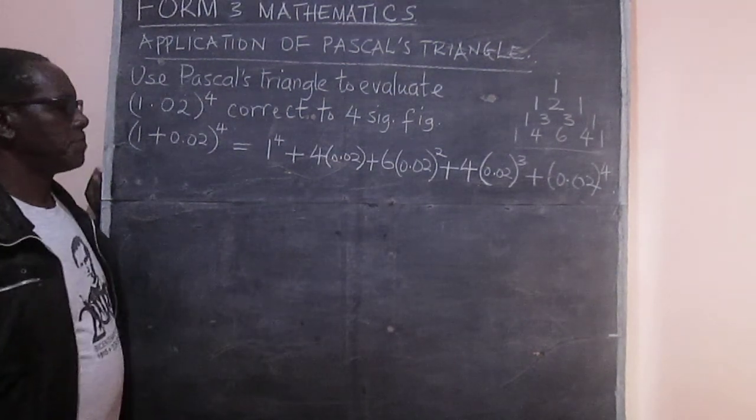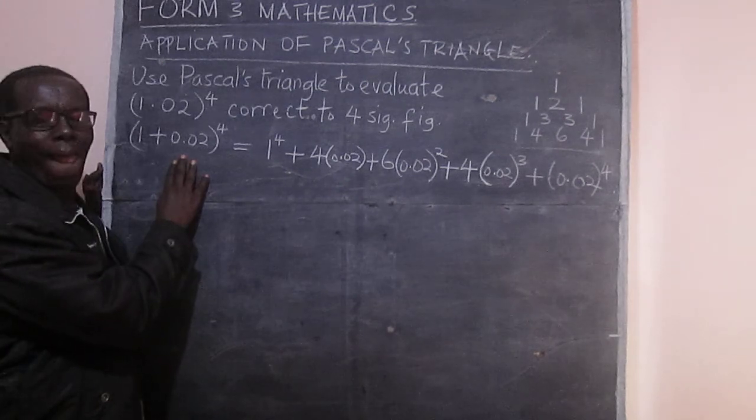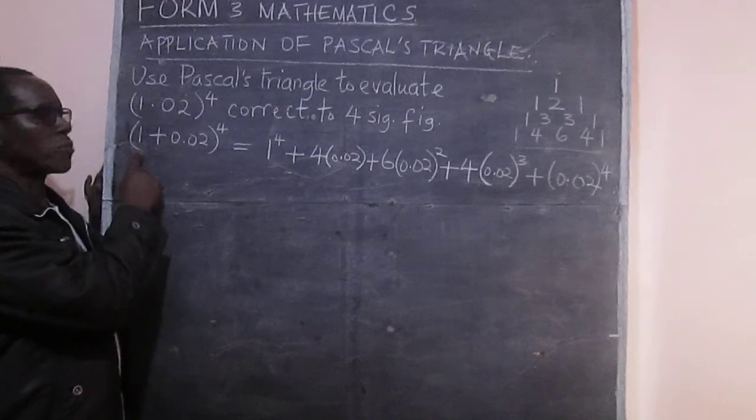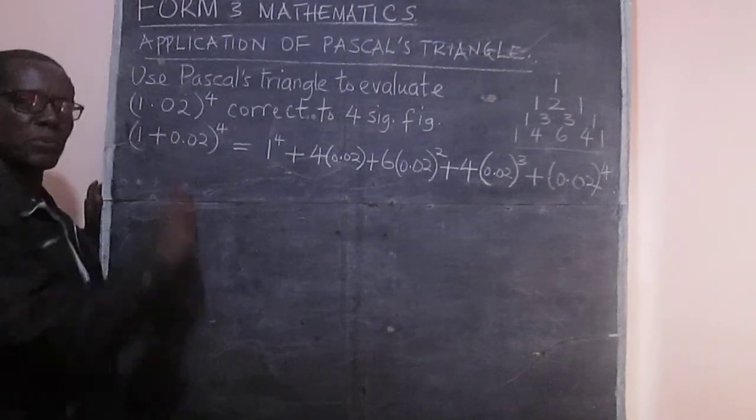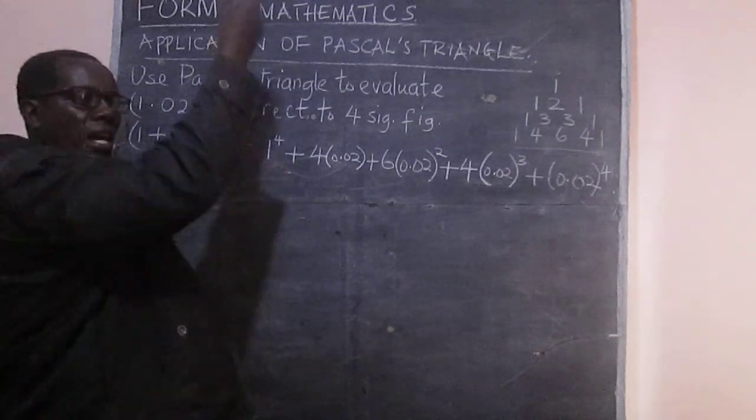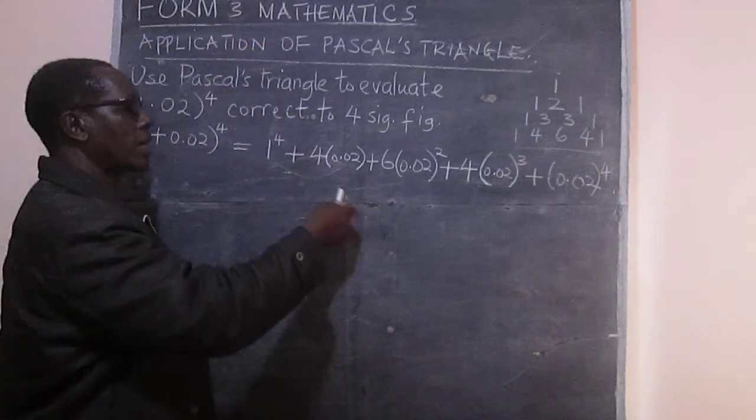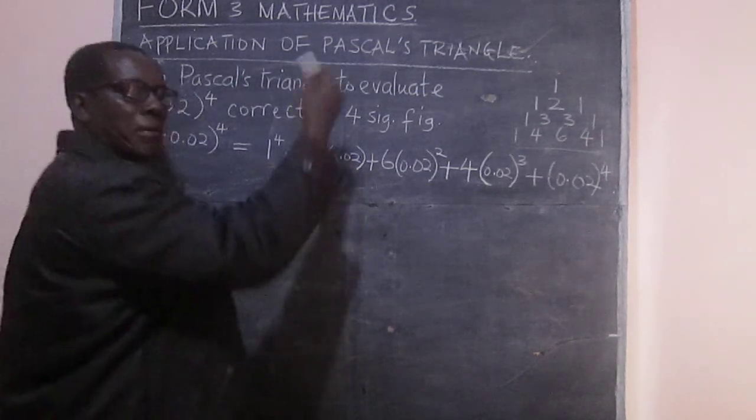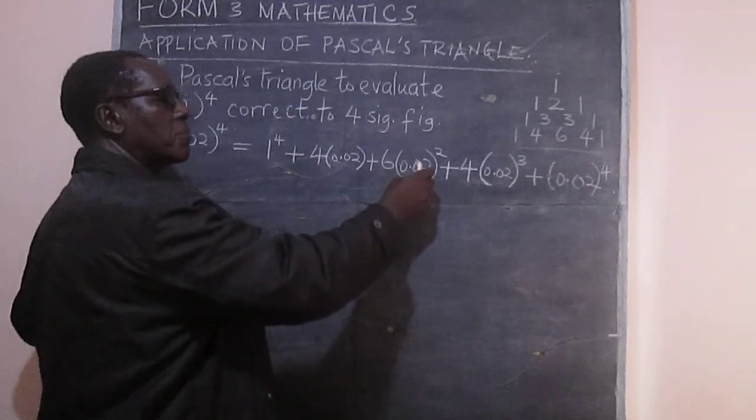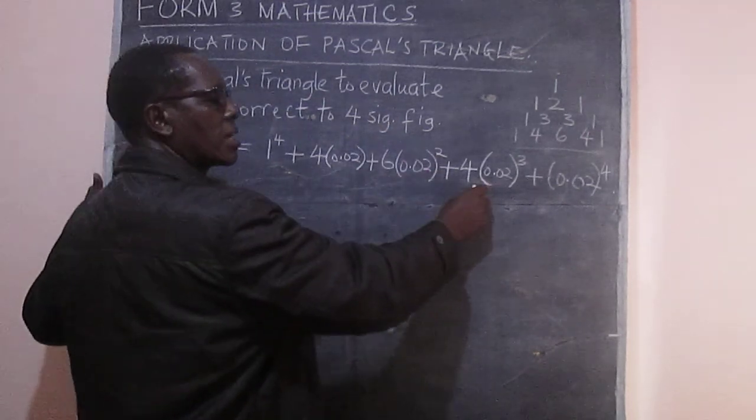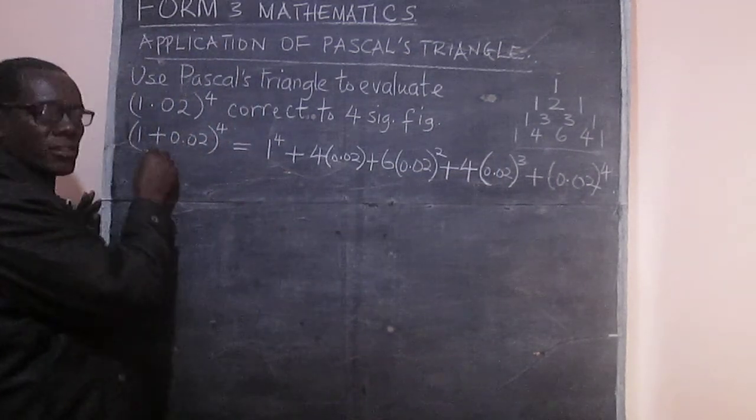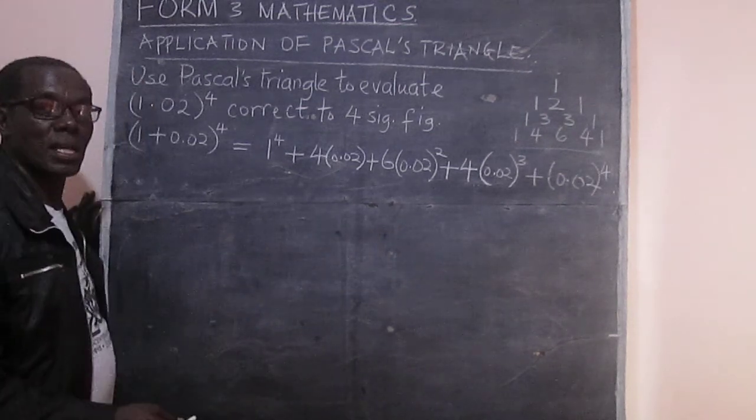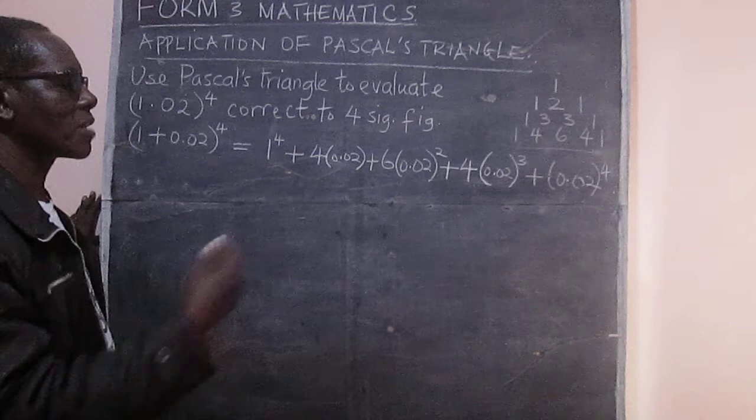But we can go over that again. The expansion of this one is just like the expansion of a plus b, where we have taken our a to be 1 and our b to be 0.02. So I will start with a having the highest power and going on decreasing. So here a will have power 3, and b will have power 1. And then here a will have power 2, and b will have power 2. Here a will have power 1. But then our a in this case is just 1, so 1 times any number of times just becomes 1.